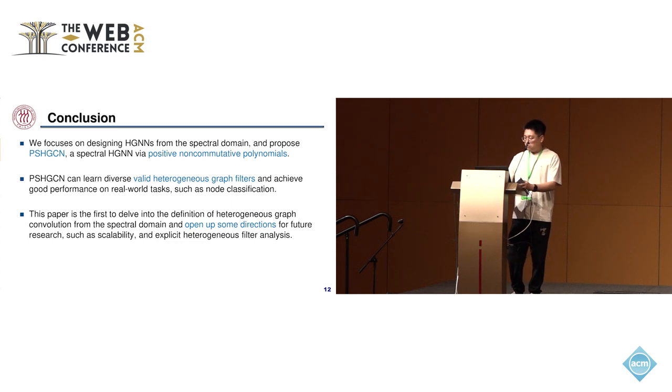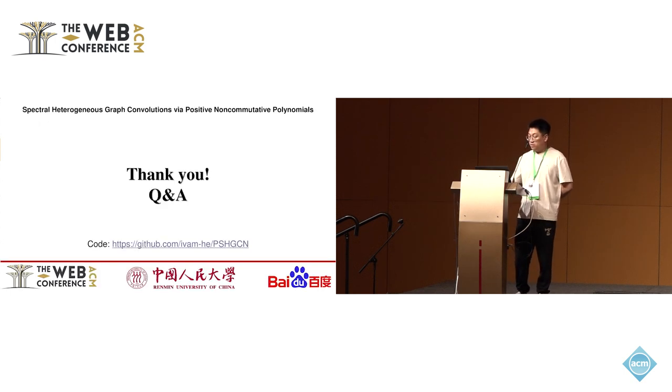In conclusion, we focused on designing HGNNs from the spectral domain and proposed PSHGN, a spectral HGNN with positive non-commutative polynomials. PSHGN can learn diverse heterogeneous graph filters and achieve good performance on real-world tasks such as node classification and link prediction. This paper is the first to delve into the definition of heterogeneous graph convolution from the spectral domain and opens new directions for future research such as scalability and interpretable heterogeneous graph filter analysis. That's all of my presentation. Thank you.